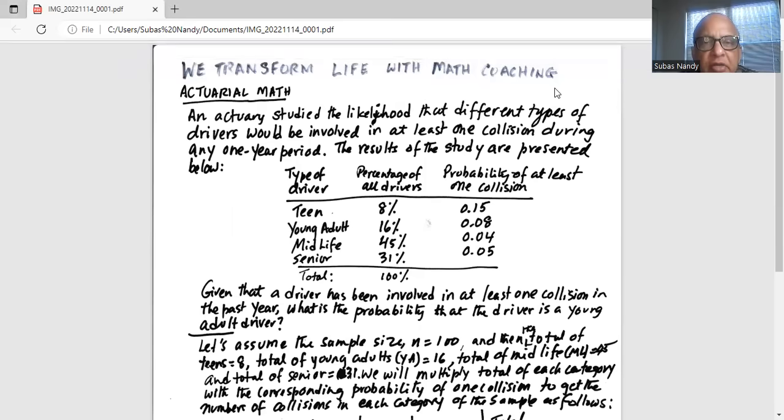An actuary has studied the likelihood that different types of drivers would be involved in at least one collision during any one-year period. The results of the study are presented below.